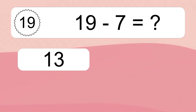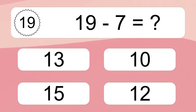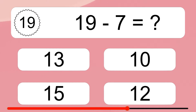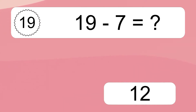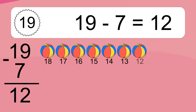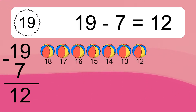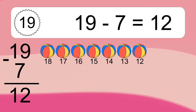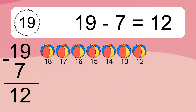19 minus 7 equals what? 19 minus 7 equals 12. Let's count it: 18, 17, 16, 15, 14, 13, 12.